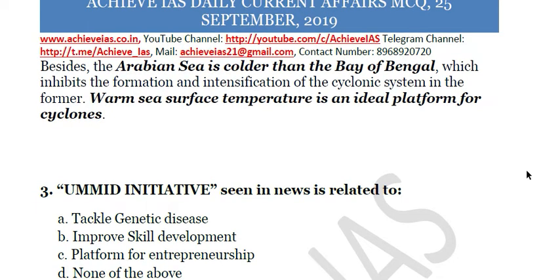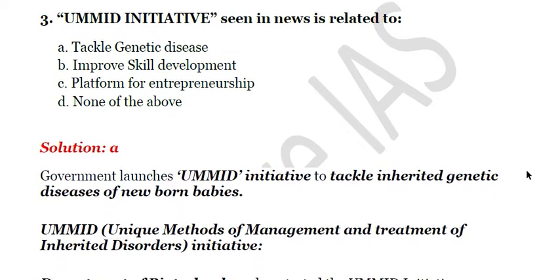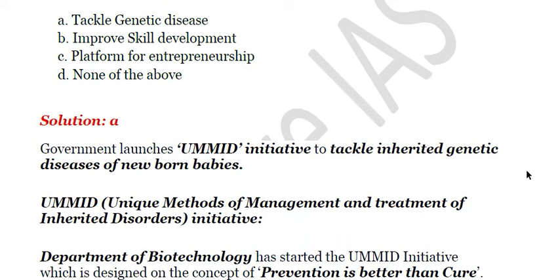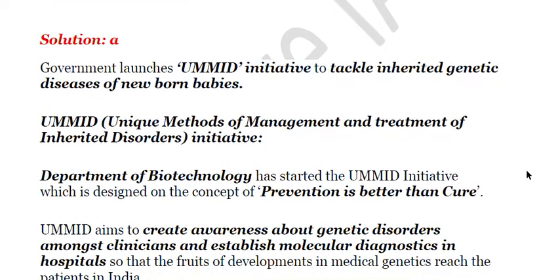Question three: the UMID initiative seen in news is related to — A) tackles genetic disease, B) improve skill development, C) platform for entrepreneurship, D) none of the above. The answer is A. UMID stands for Unique Methods of Management and Treatment of Inherited Disorders. It is an initiative launched by the Department of Biotechnology to tackle inherited genetic diseases in newborn babies, designed on the concept that prevention is better than cure.